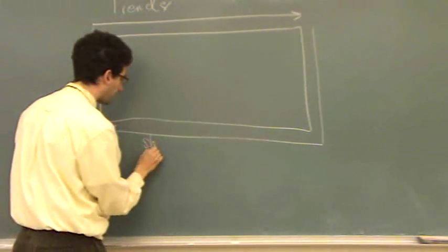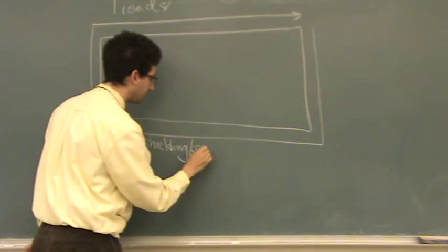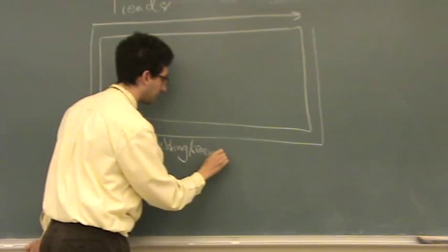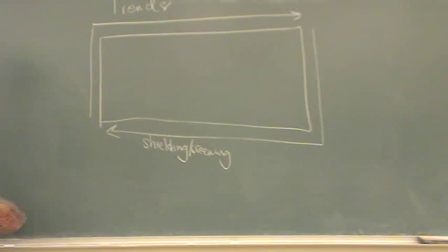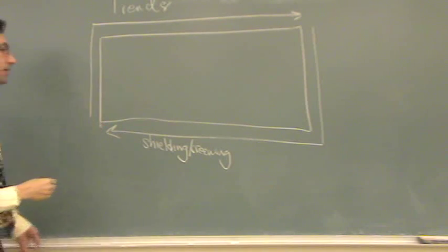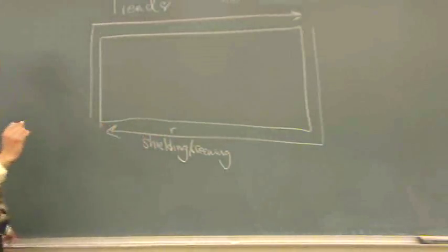And I'll explain the concepts in a second, but something called shielding or screening increases as you go down and left, so it's more shielded down here. Another thing that follows that trend is the radius, R.